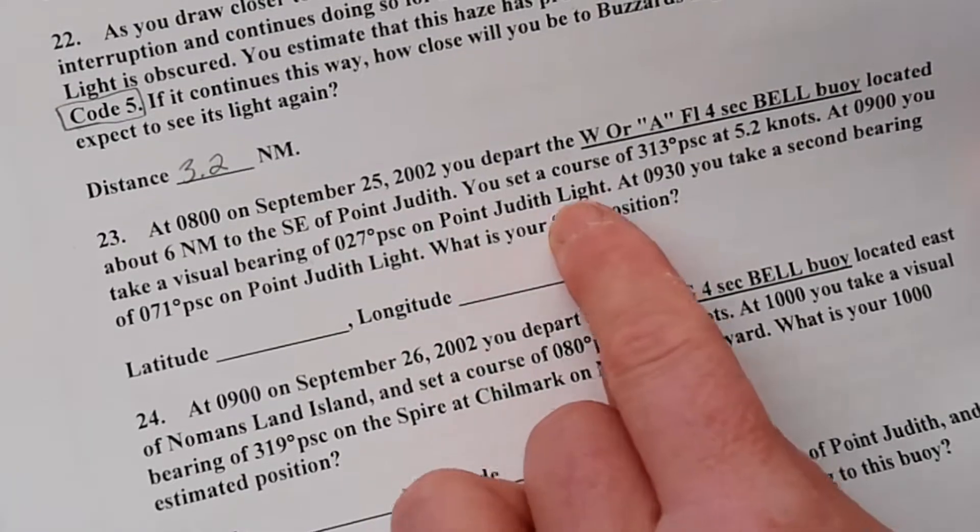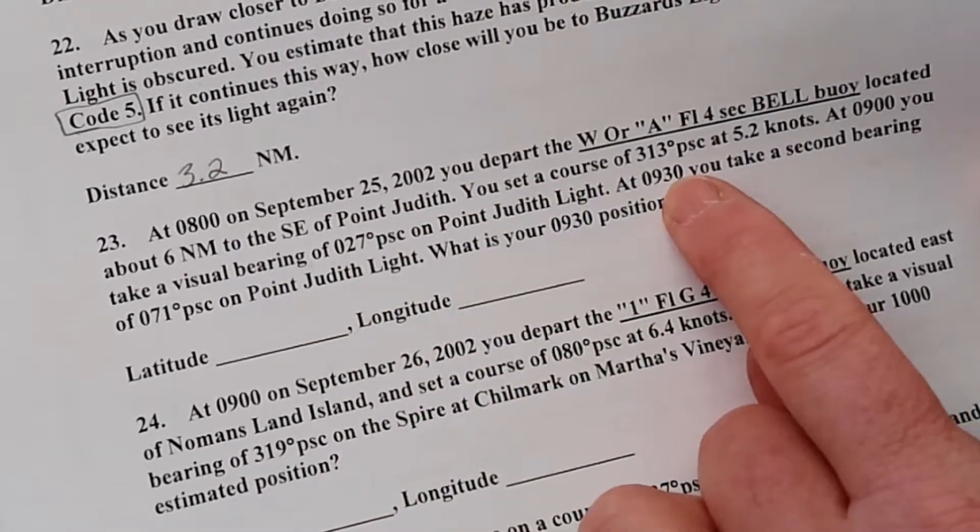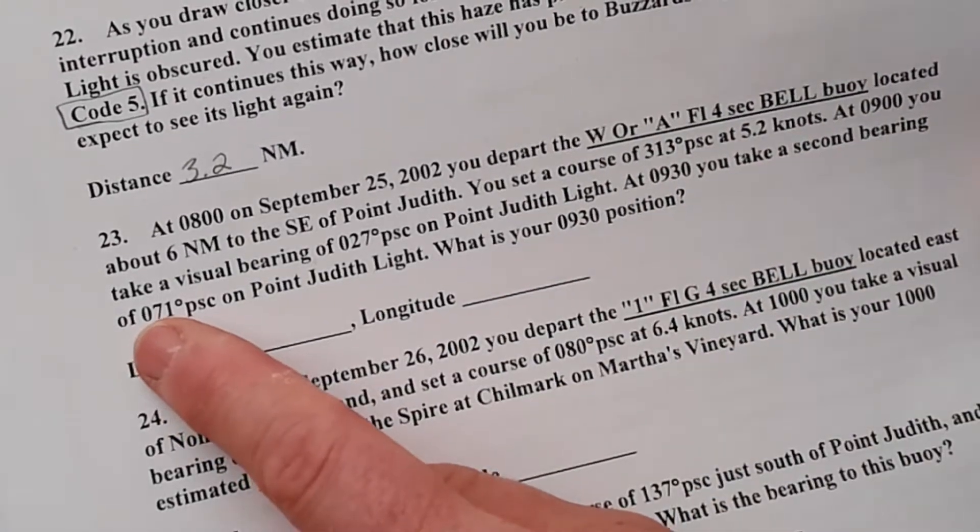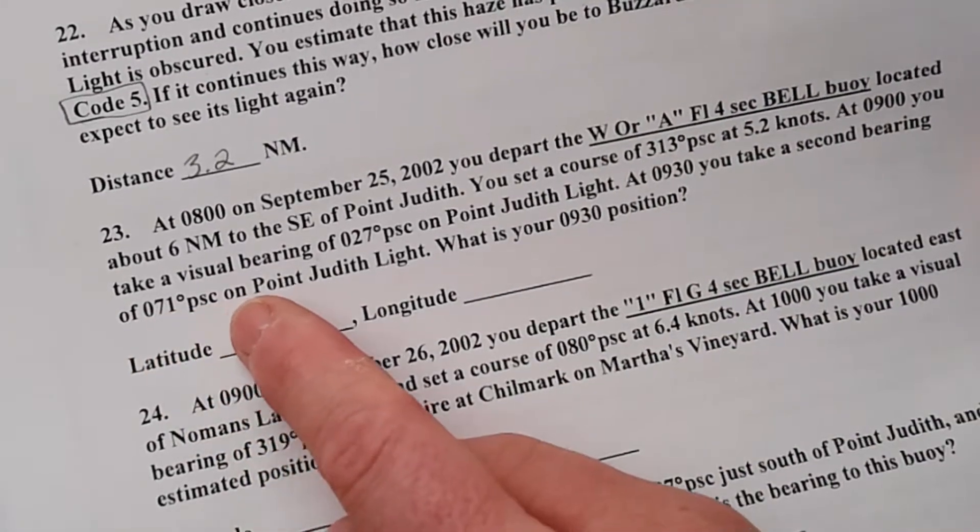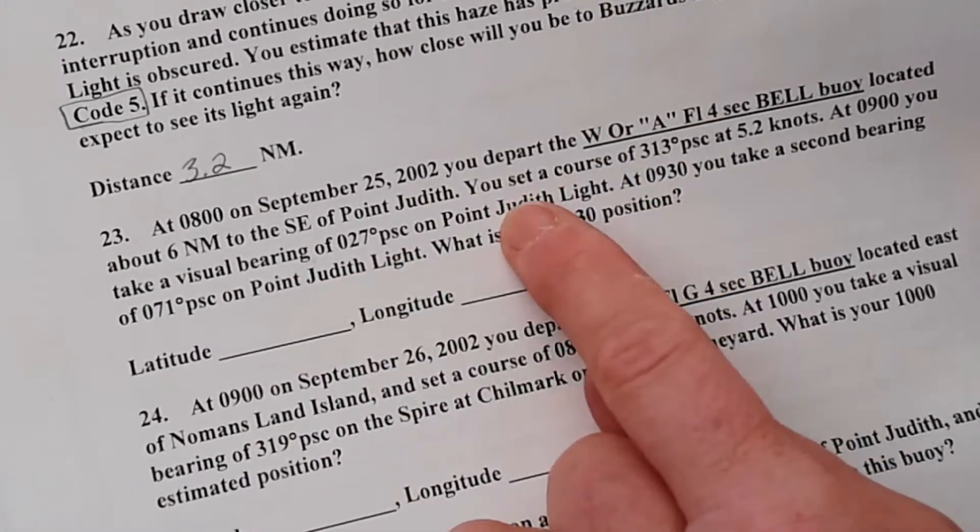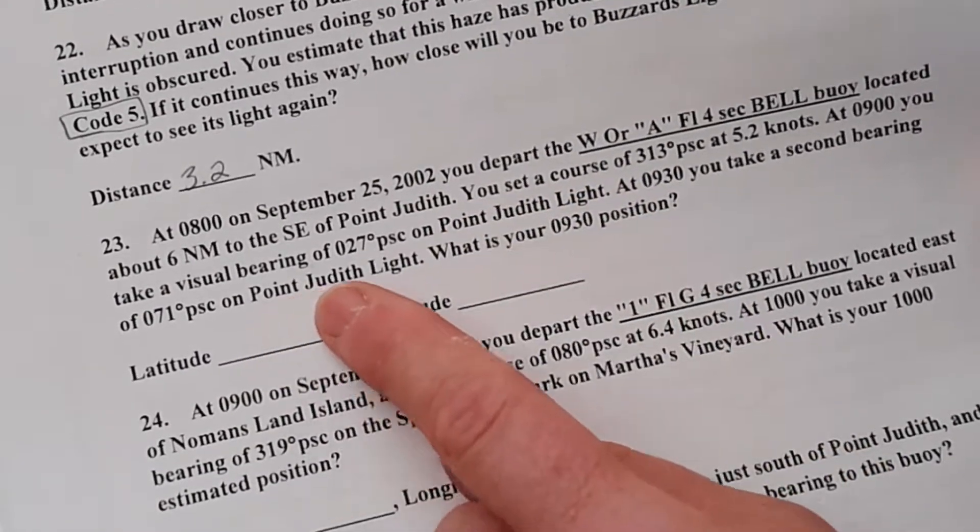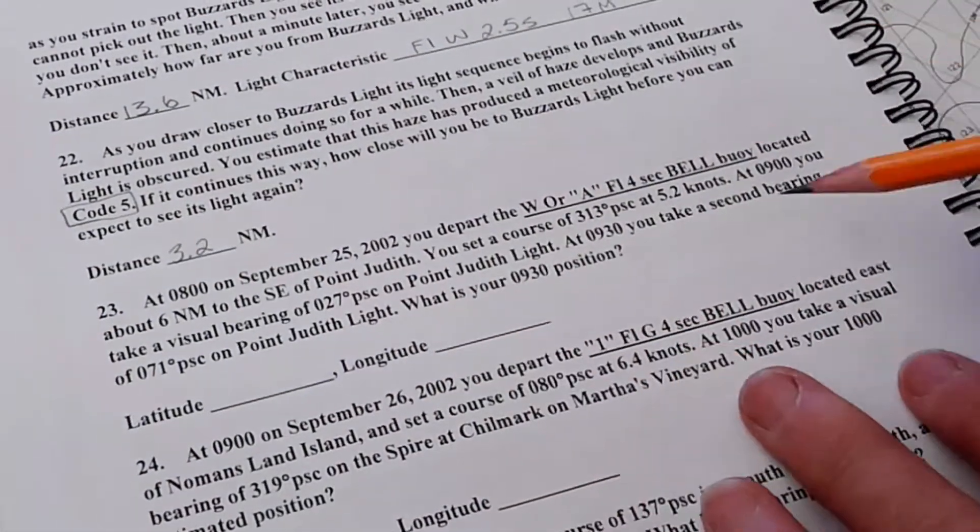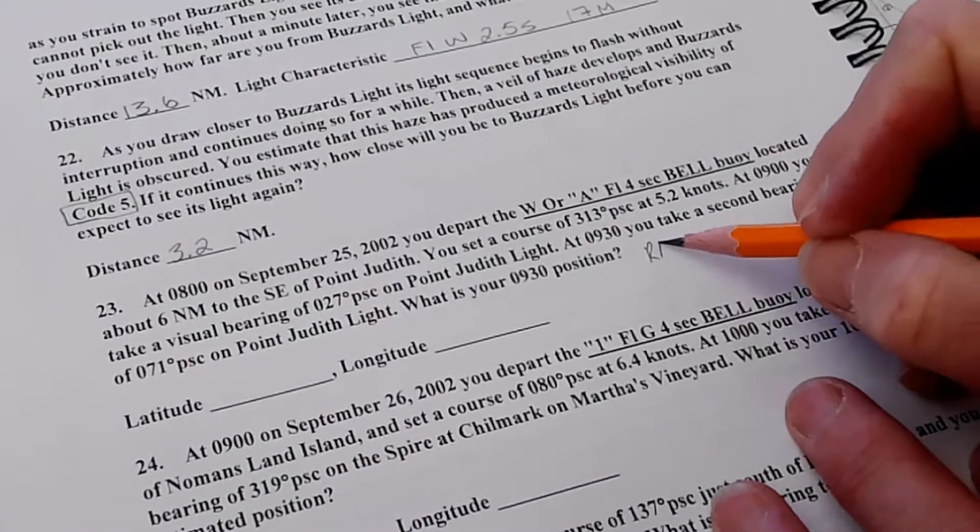At 0900 you take a visual bearing of 027 per ship's compass on Point Judith Light. At 0930, half an hour later, you take a second bearing of 071 degrees per ship's compass on Point Judith Light. Using the same light but at two different places and times, this is why it's a running fix.